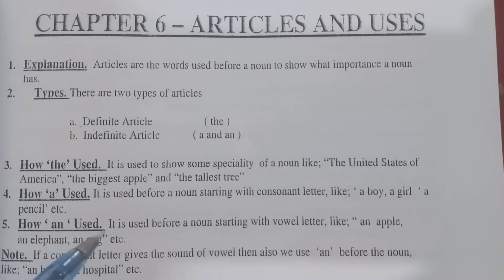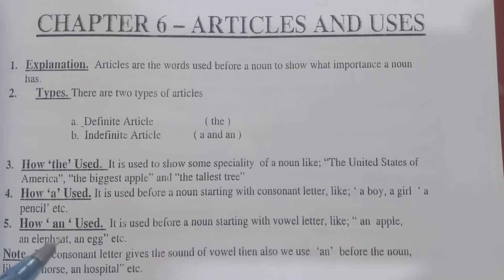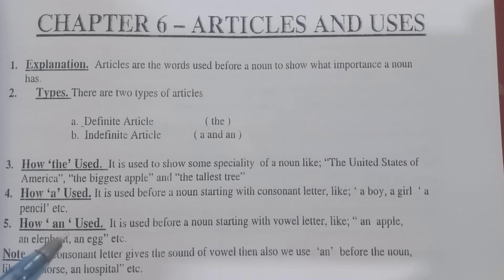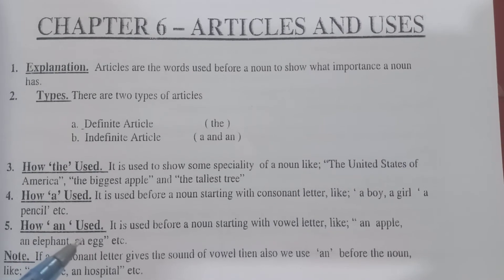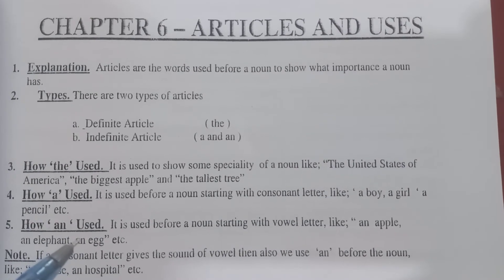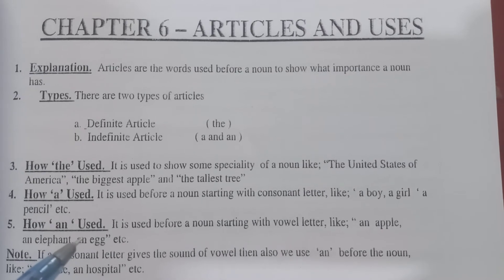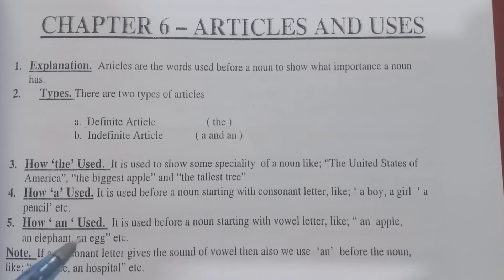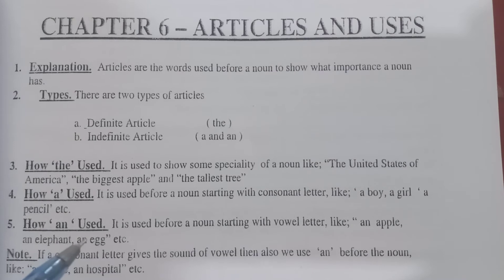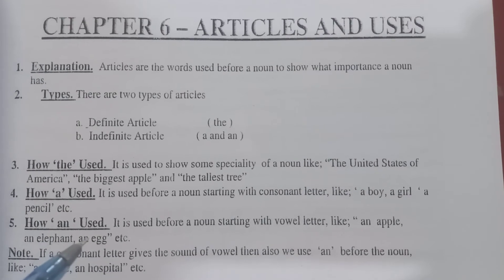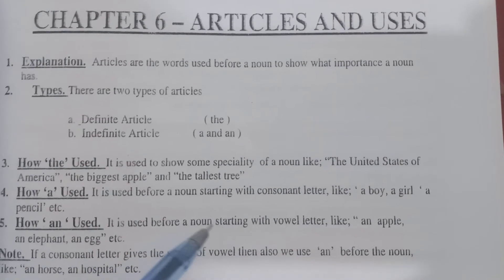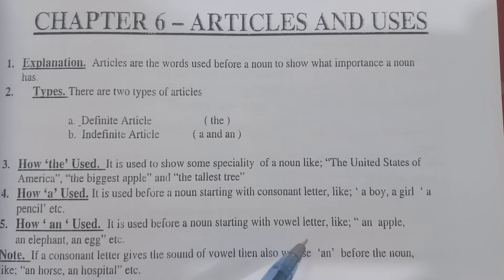How is 'an' used? 'An' is a word that is used with vowel words. How many vowel letters are there? There are five vowel letters: A, E, I, O, U. 'An' is used before a noun starting with a vowel letter.